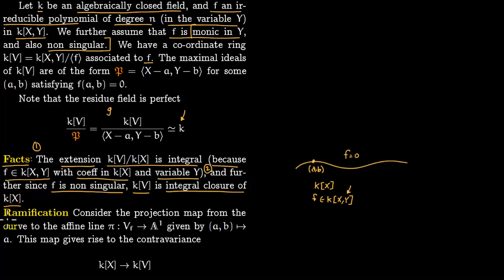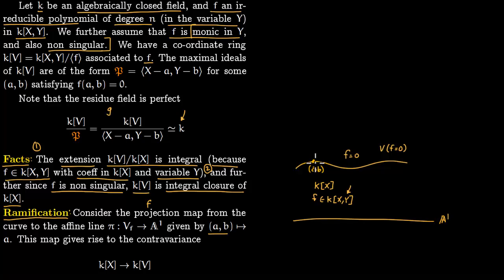Now we talk about ramification. From our curve f we can consider the projection map to the affine line A¹: the vanishing set V(f) is the curve, and from a point (a,b) on this curve we project to a in A¹. This projection gives rise to contravariance: corresponding to A¹ we have the ring k[x], and corresponding to V(f) we have the coordinate ring kV, with the ring map arrow reversed.